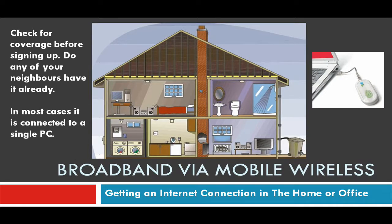For broadband via mobile wireless, the mobile operator will send you out a small wireless device that can be plugged into either a laptop or a desktop PC — you don't need any other hardware or cables, it's self-contained. Just make sure you have coverage, not only in your area but specifically within your home or office, as building materials can block or weaken the signal. If possible, borrow one of these units to test coverage where your computer is. Note that it connects to a single computer, but it's ideal if you're on the road and need internet access when out and about.